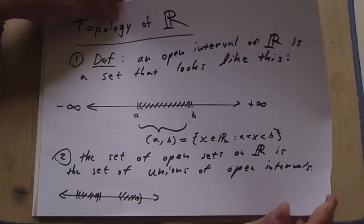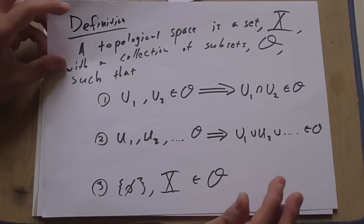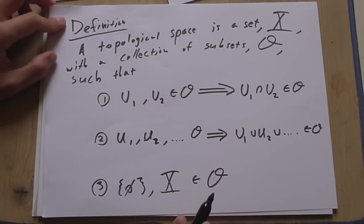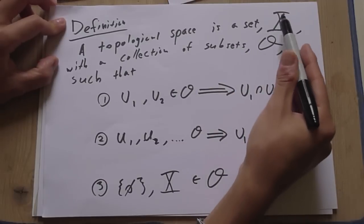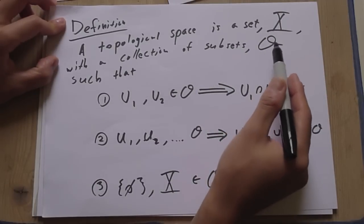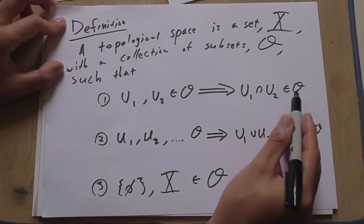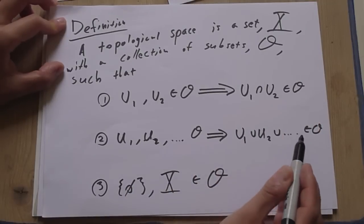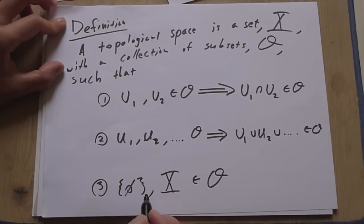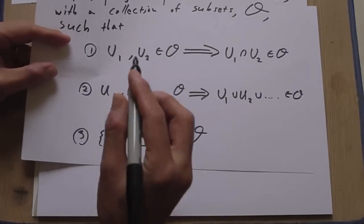So let's just check that this is a topology. So to check that it's a topology, we have to remember what a topology is. So just to remember, a topology is a set X with a collection of subsets O, such that if you take intersections, you get an open set. If you take infinite unions, you get an open set. And the entire space and the empty set are in O.